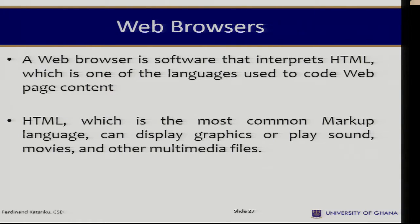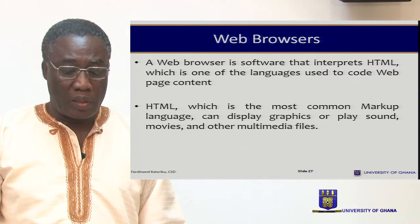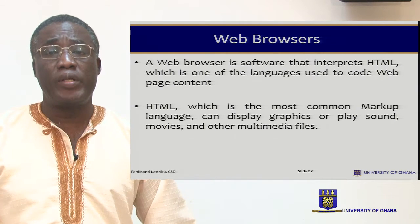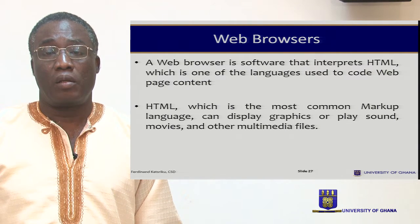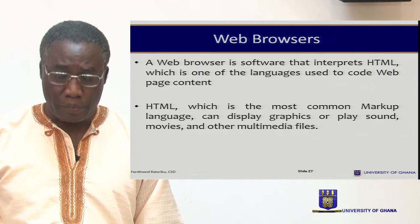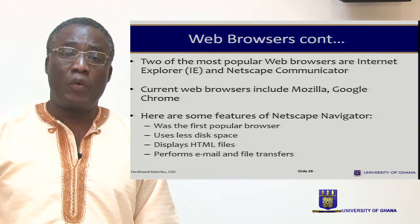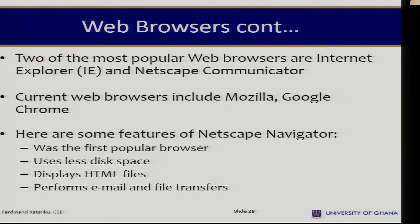What are web browsers? Web browser software shows information in a window of a PC's video display. That information might be simple text, graphics, video, or animation. Web browsers can also play video. A web browser is software that interprets HTML, which is one of the languages used to code web page contents. HTML is the most common markup language and can display graphics or play sound. Some of the most popular web browsers today are Internet Explorer, Netscape, Mozilla, Firefox, and so on. You also have Google Chrome and so on.